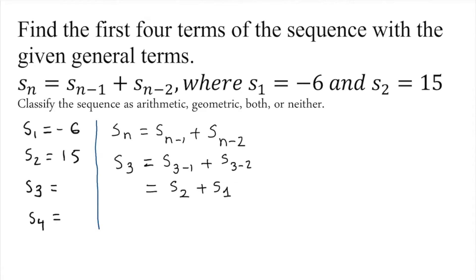So what we have here is s_2 plus s_1. Right now we know that both are given. s_2 is 15 and s_1 is negative 6. So we're gonna substitute it here: 15 minus 6, that would give us 9. So we have 9 highlighted. We have this new one.